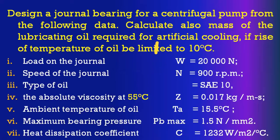You are asked to design a journal bearing. Apart from this design, you are also asked to find out the mass of the lubricating oil required for artificial cooling. That means the bearing is not under complete thermal equilibrium, and if it is not in thermal equilibrium, some amount of extra heat is generated compared to the capacity of heat dissipation. This extra heat must be dissipated by artificial cooling using water or coolant oil, with temperature rise limited to 10 degrees centigrade.